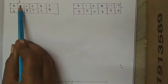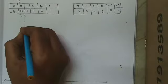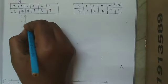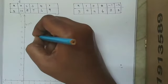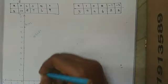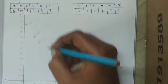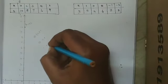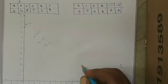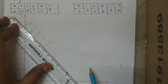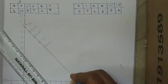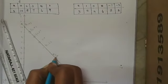Now let us represent the points for the first equation. X is 0, y is 10 — it lies on the Y axis. Next: (2, 8), (3, 7), (4, 6), and (1, 9). After plotting all these points and joining them, this is the line for the equation x plus y equals 10.